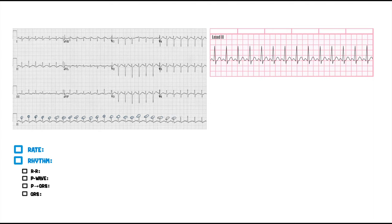27. So if we have 27 R waves and we multiply that by 6, that equals 162 beats per minute.